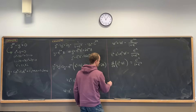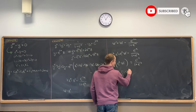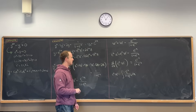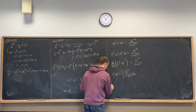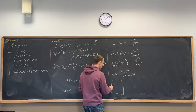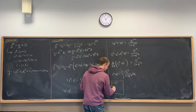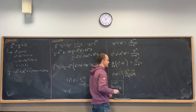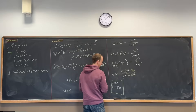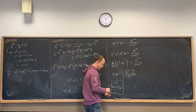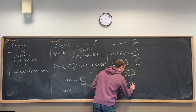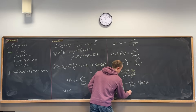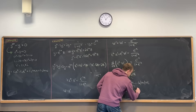Taking the antiderivative of both sides gives e to the x times w equals the antiderivative of e to the minus x over 1 plus e to the minus x. For this integral, use the substitution u equals e to the minus x, so du equals minus e to the minus x dx. The integral becomes minus the integral of du over 1 plus u, which equals minus the natural log of 1 plus u plus a constant — that is, minus the natural log of 1 plus e to the minus x plus a constant.